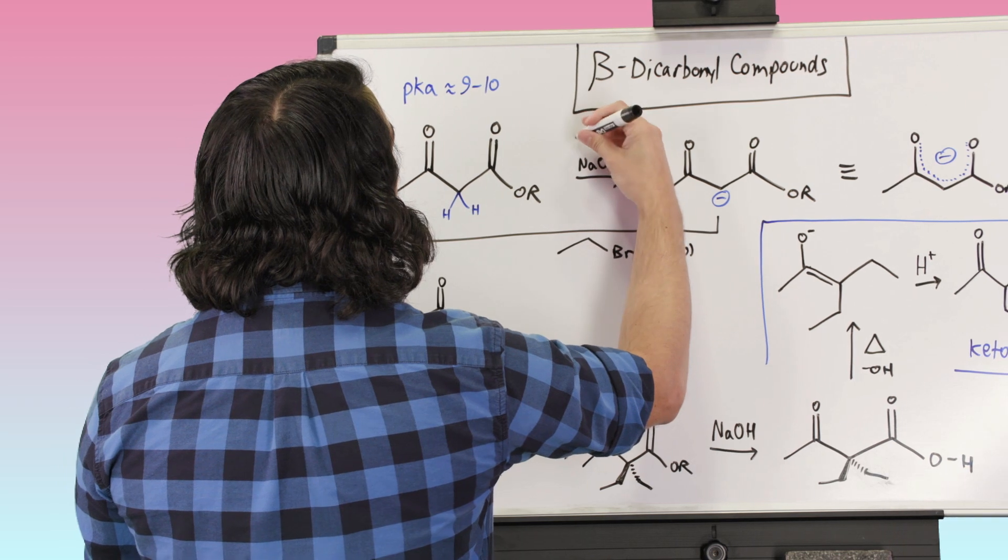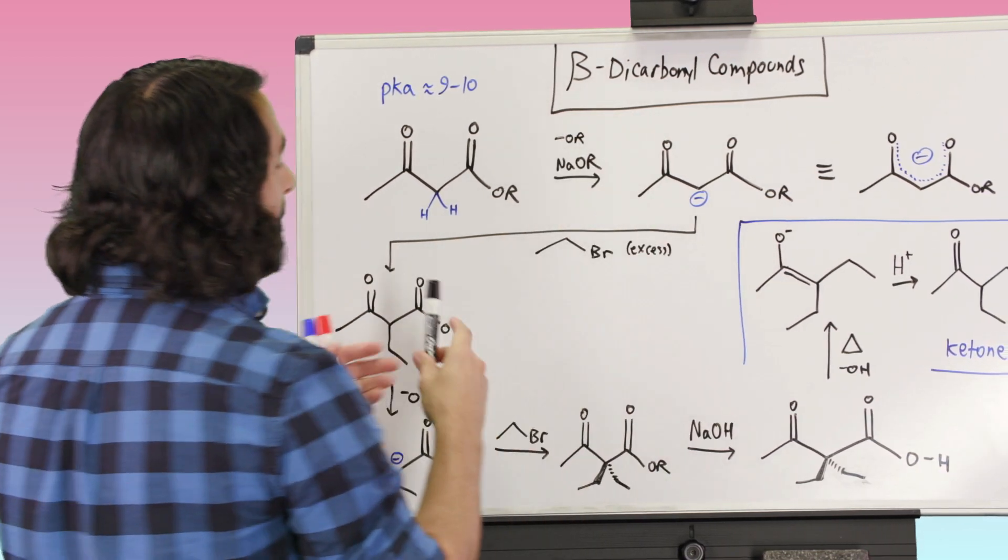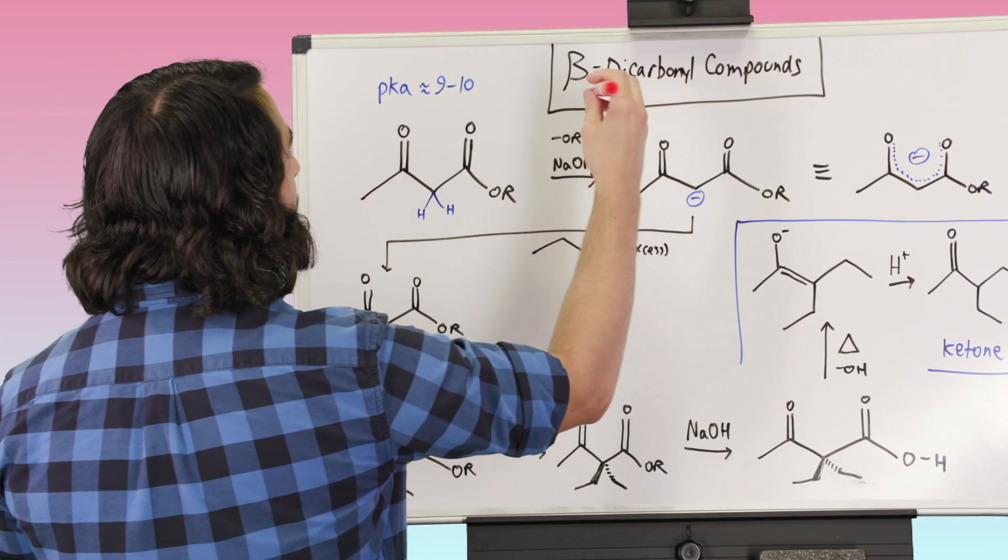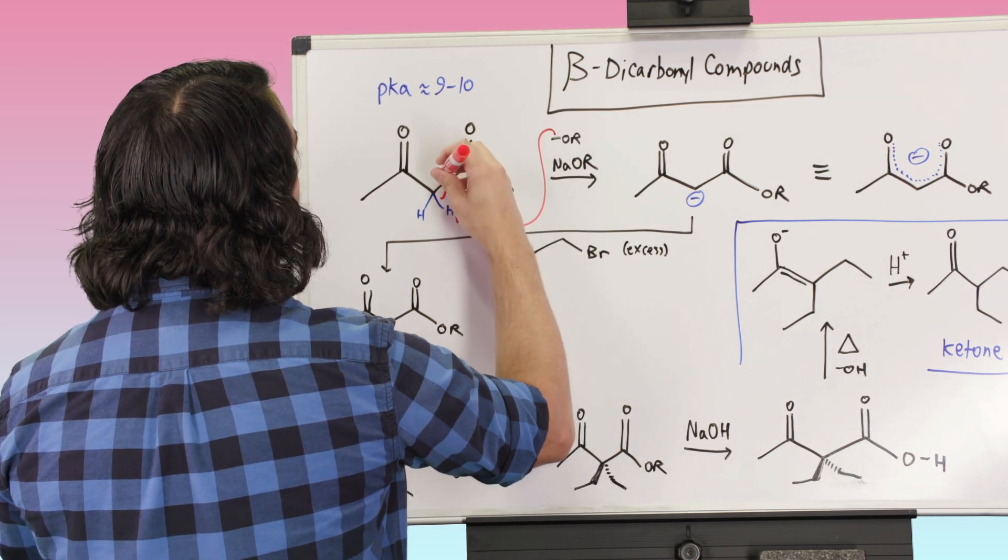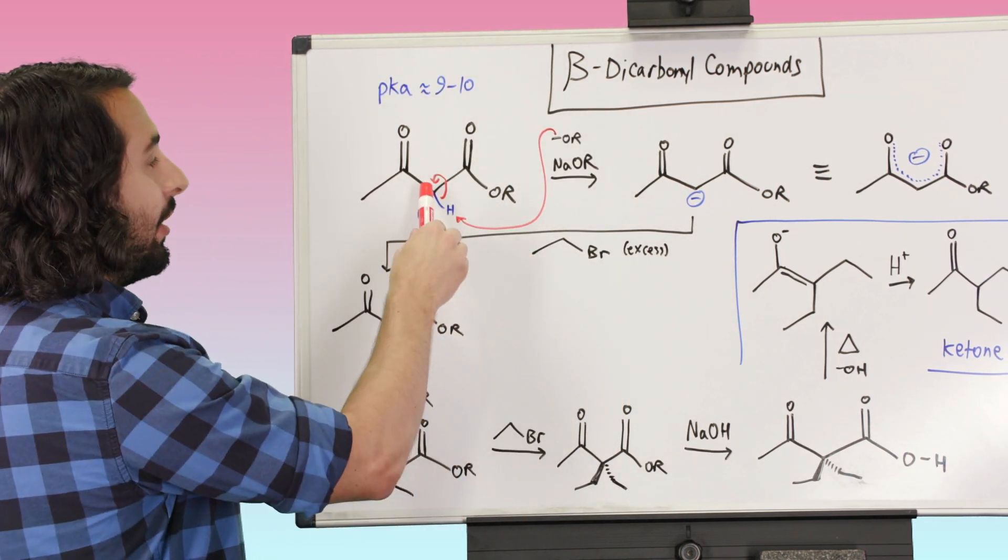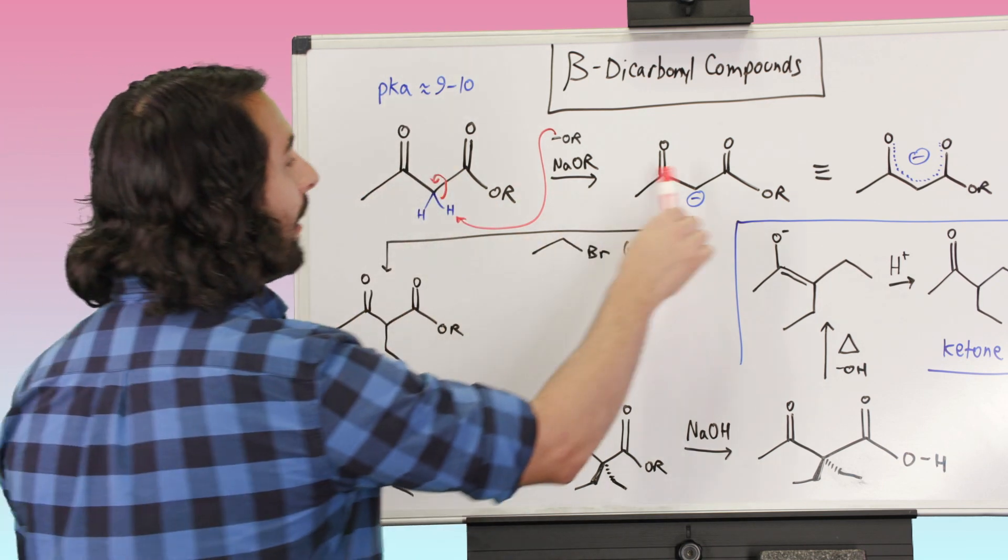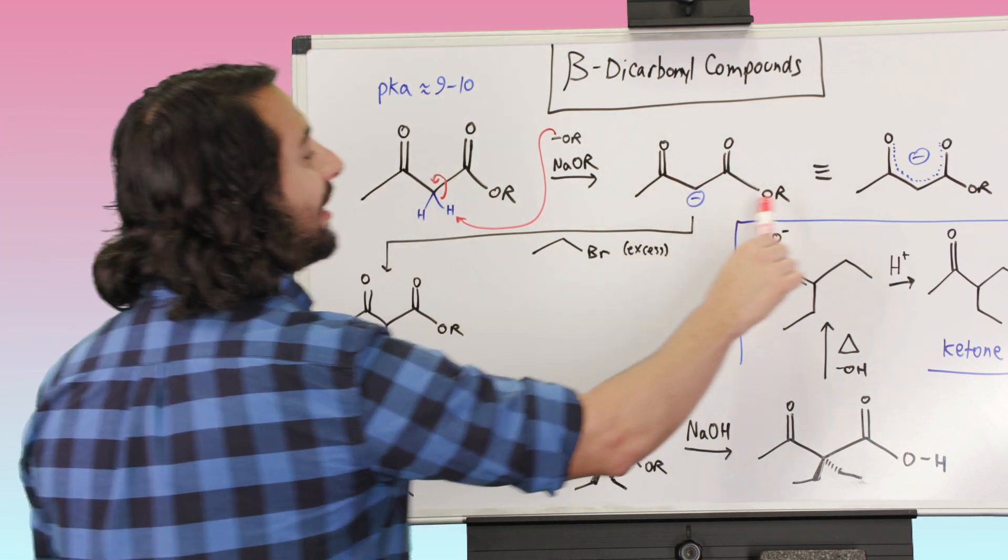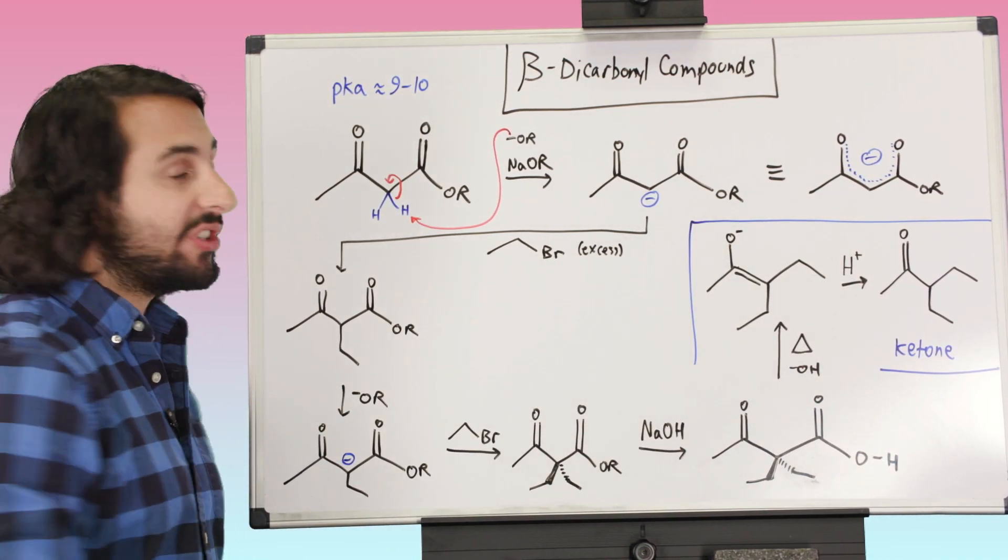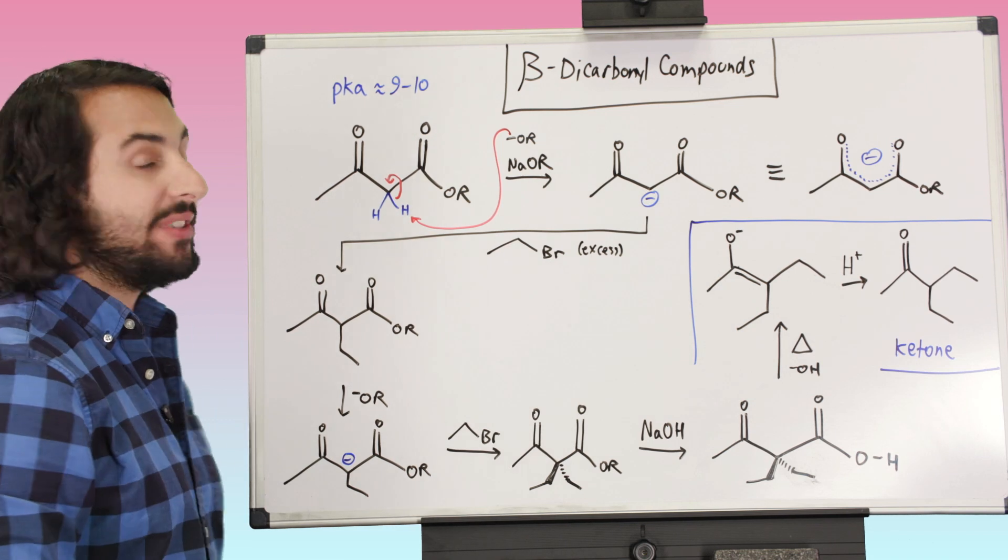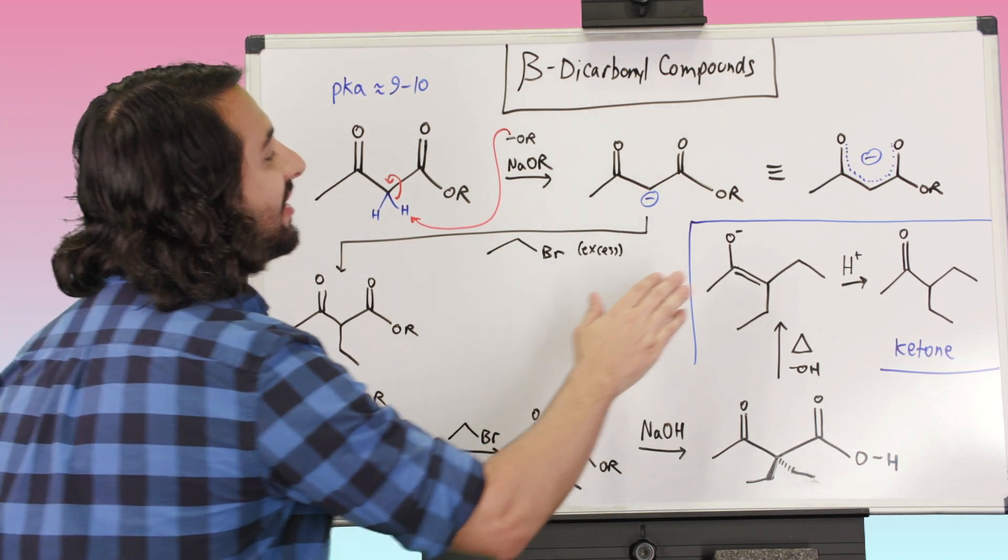So we can do some acid-base chemistry. Let's take our alkoxide, whatever it is, and let's do an acid-base reaction. Let's just leave that negative charge on the carbon right there. So we know we can push that up there, but let's show this intermediate.